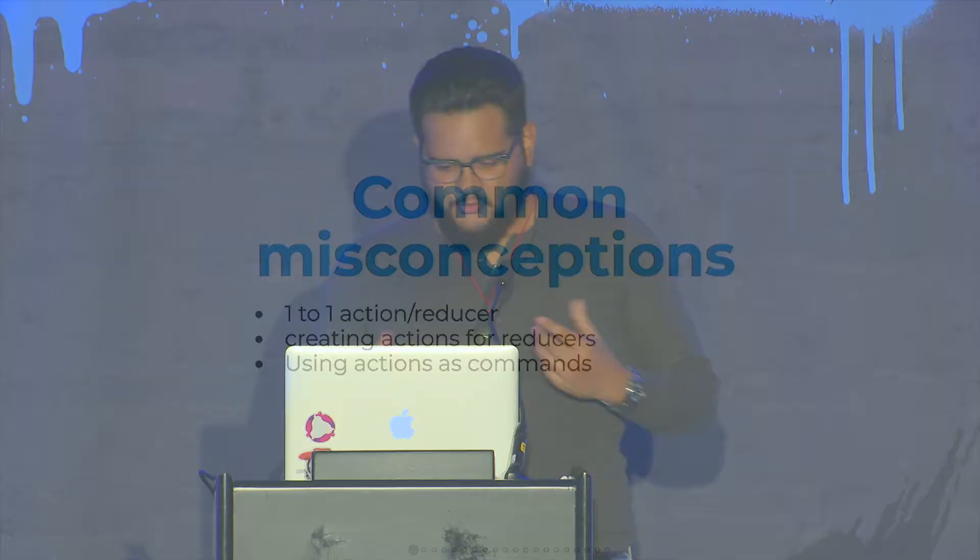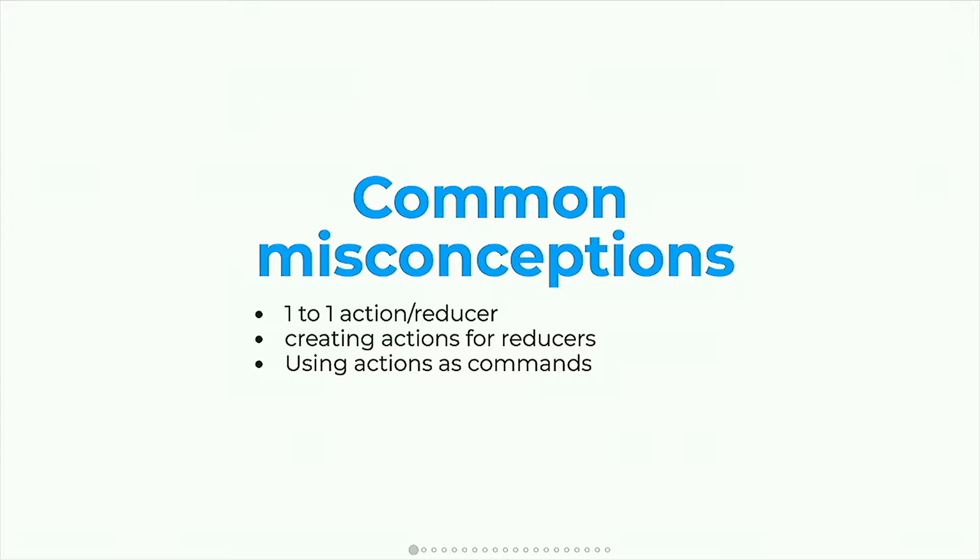And then the other thing is creating actions as commands. I remember the big thing with Redux when it came out was getting away from the MVC model. React Redux MVC was like a bad word — the M in MVC is model, model.get, model.set. These were problems because in large apps it became hard to distinguish where that .set and .get was happening. But then when people started writing actions, they would just say create to-do, delete to-do, update to-do. That's not what we want in Redux. You want to get away from that command structure.